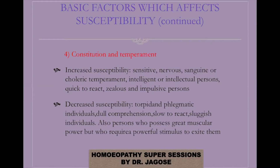Regarding constitution and temperament: susceptibility is increased in people who are very sensitive, nervous, who have a sanguine or choleric temperament, very intelligent or intellectual persons, or people who are quick to react, zealous and impulsive. Decreased susceptibility is seen in torpid and phlegmatic individuals, people with dull comprehension, who are slow to react, sluggish individuals, and persons who possess great muscular power but require a powerful stimulus to excite them.